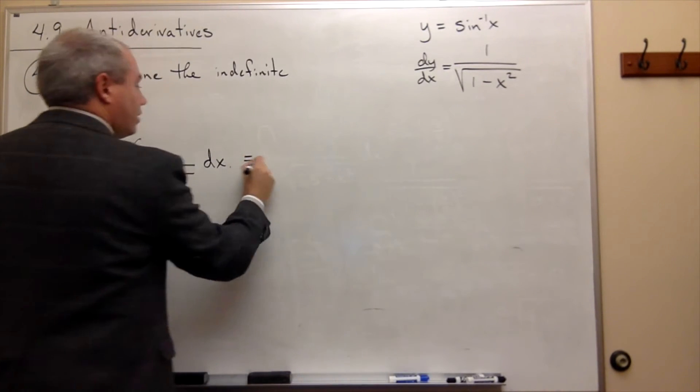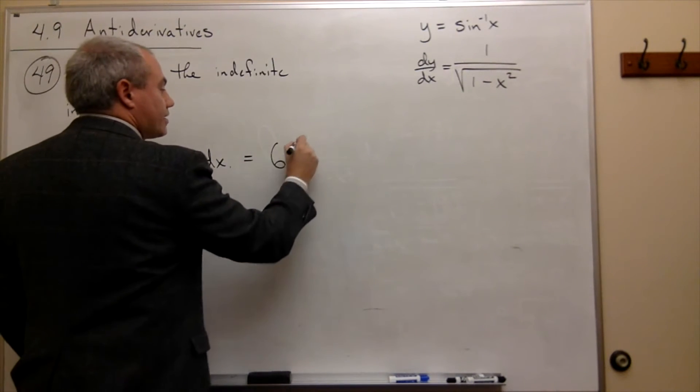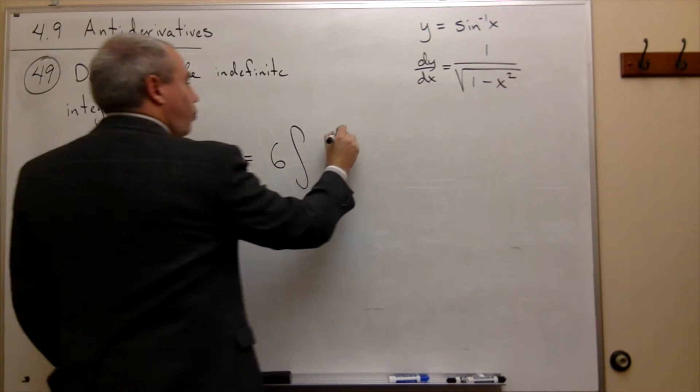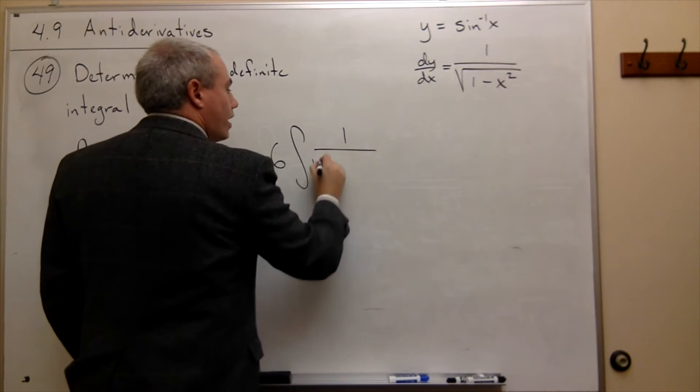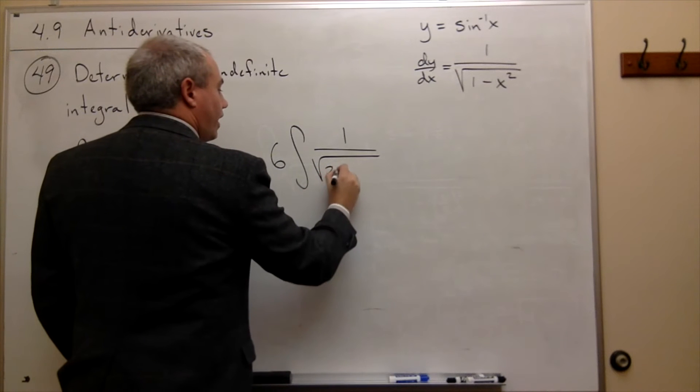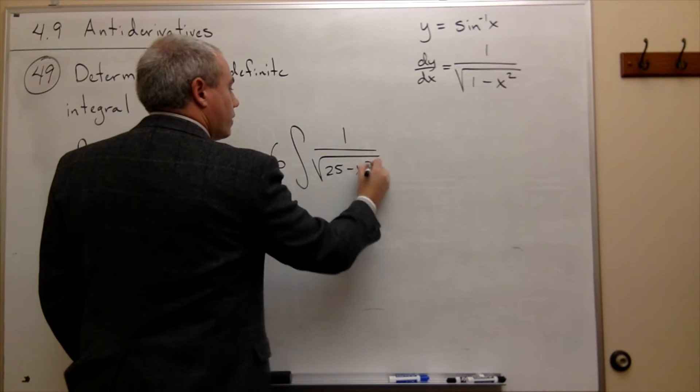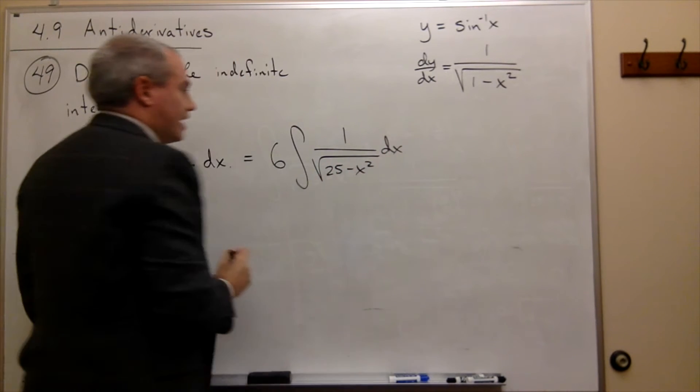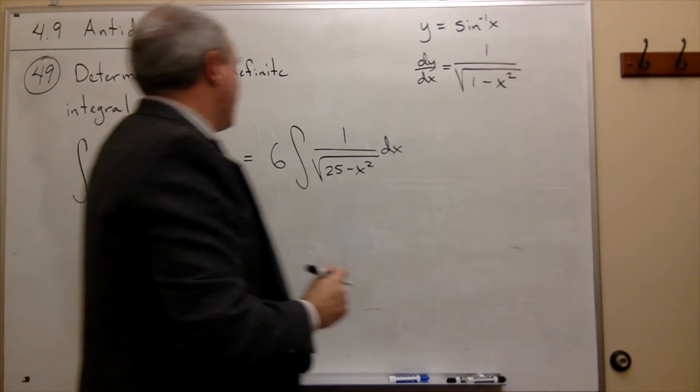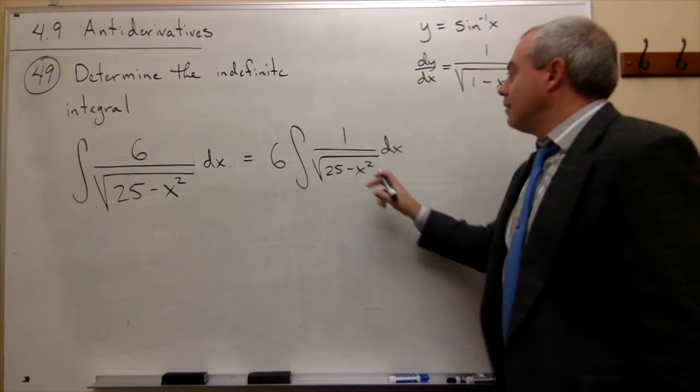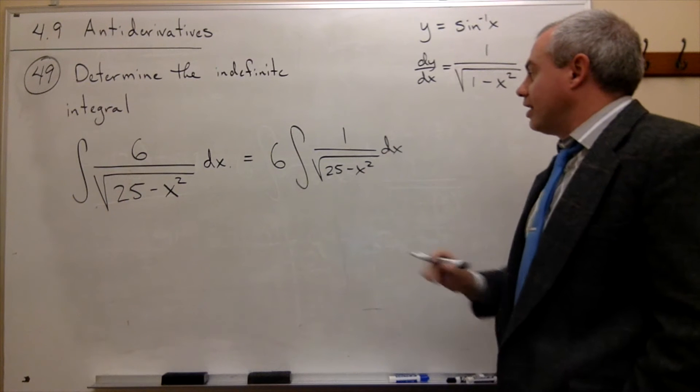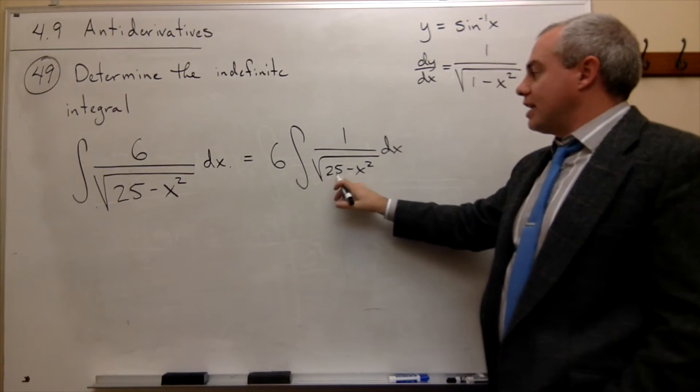So I could rewrite this as 6 times the integral of 1 over the square root of 25 minus x squared dx. Now, this is a little bit better, because now I have the 1 on top, which I wanted, but I do not have the 1 here.